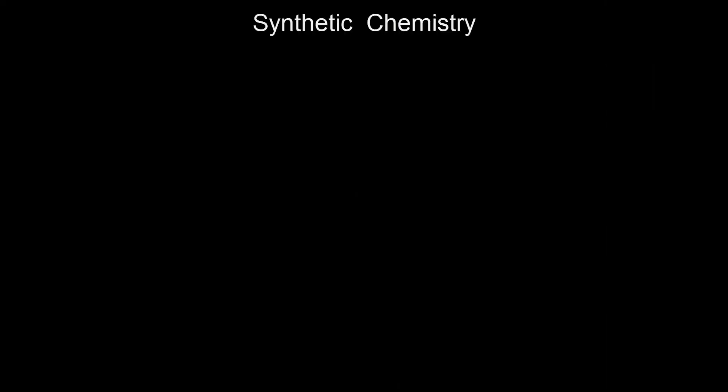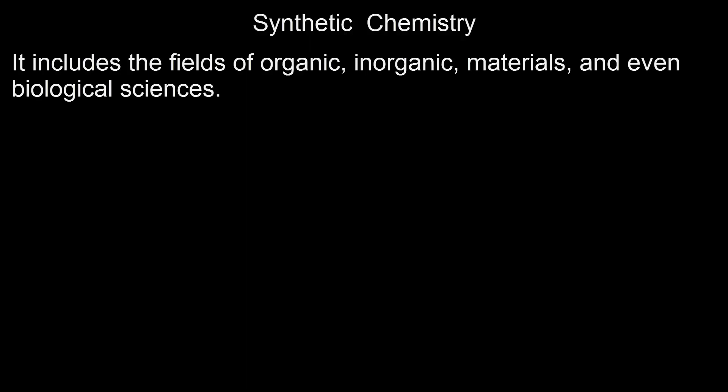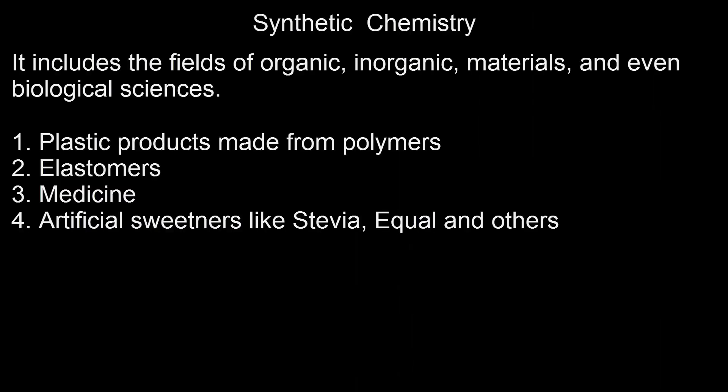The next branch is synthetic chemistry, which includes the fields of organic, inorganic, materials, and even biological sciences. Examples of things that fall under synthetic chemistry include plastic products made from polymers, elastomers which are flexible rubber materials, medicines, and artificial sweeteners like stevia and equal.